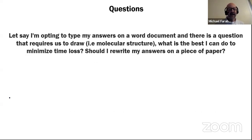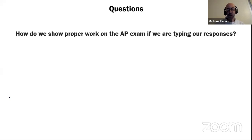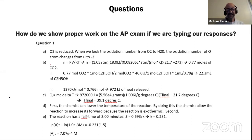A student asks: if I'm opting to type my answers on a Word document and there is a question that requires us to draw — for example, a molecular structure — what should I do? The good news is on the 2020 AP Chemistry exam, you do not have to draw a structure or label a diagram or draw particles, so no worries about that. How should we show proper work on the AP exam if we are typing our responses? Take a look at how students are doing it successfully. You can go ahead and type, and there is a keyboarding tip sheet available linked in the video description. You're welcome to type — just show your work, show your setup — you don't have to get fancy with superscripts and subscripts.